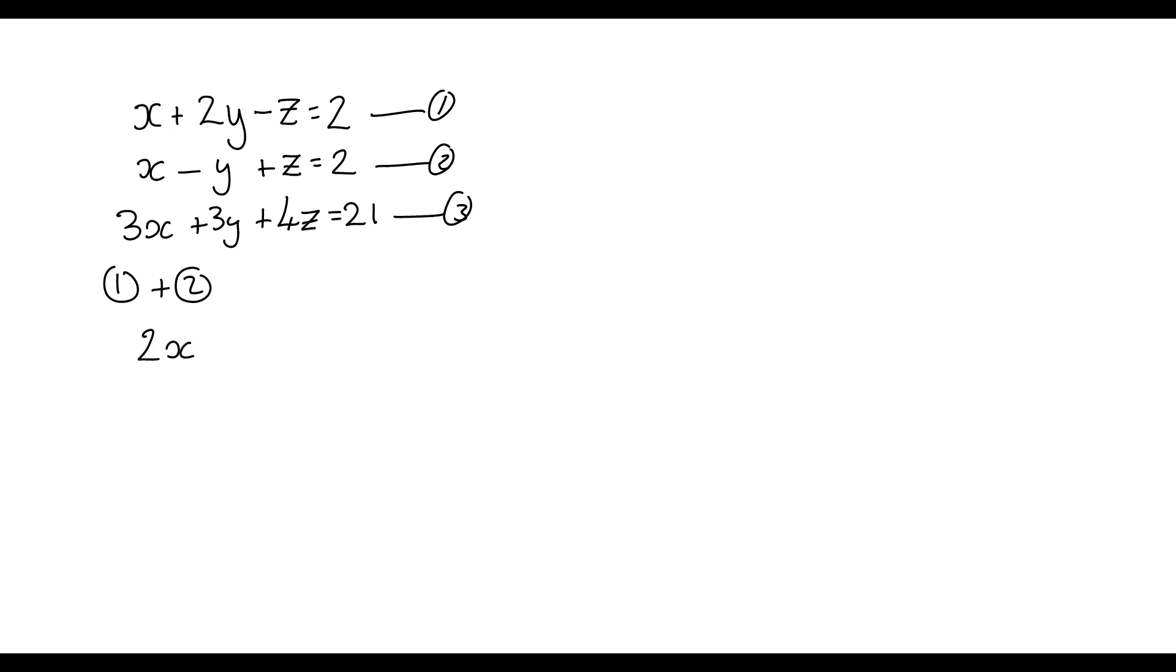It's important to notice that each equation is set out as X's, Y's, Z's, then equals the constant. And then I've got 2Y minus Y is just Y, then minus Z plus Z is nothing, and then 2 plus 2 is 4.